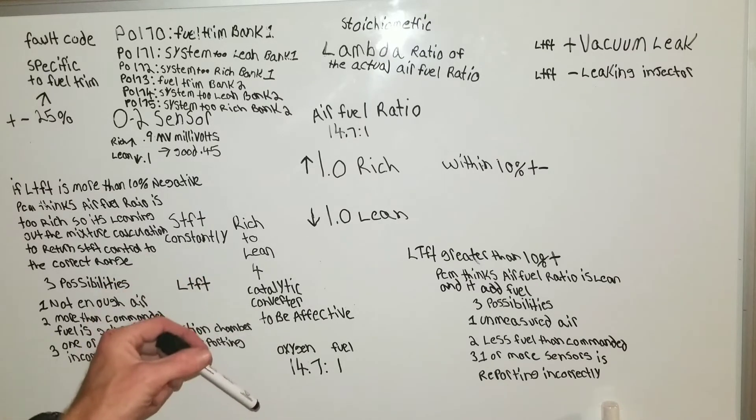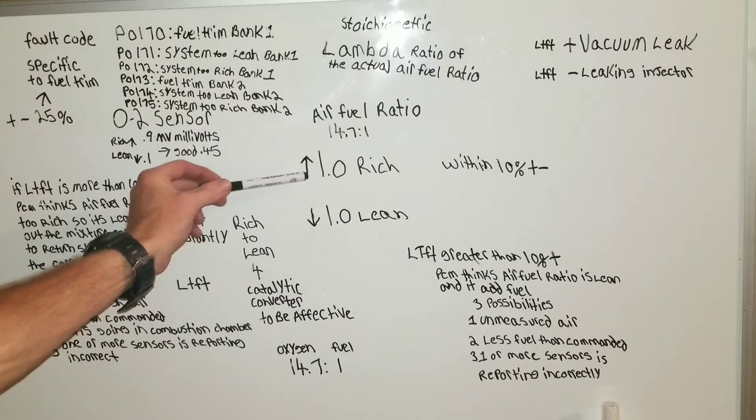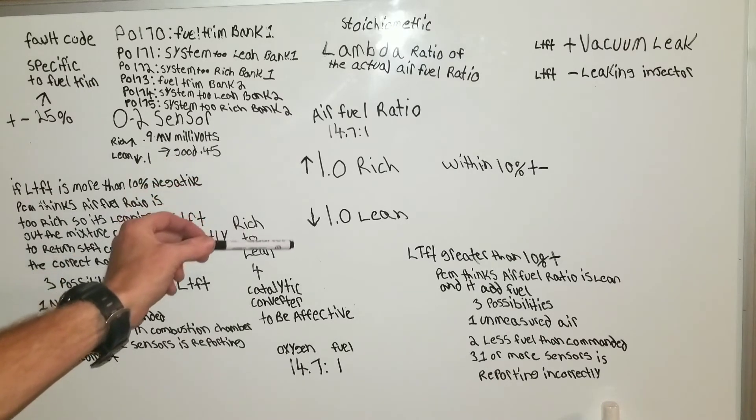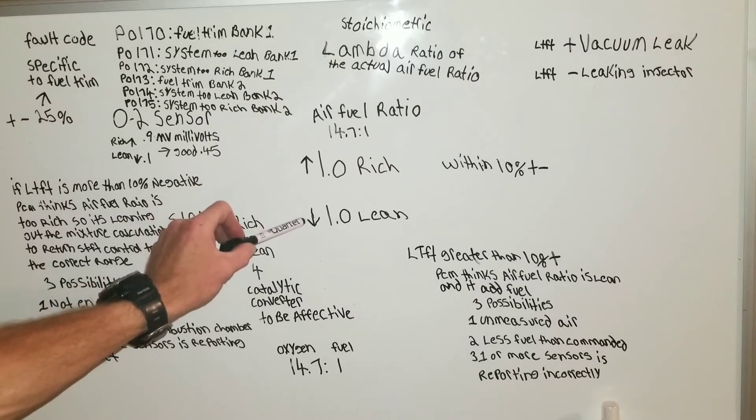If your air fuel ratio or lambda is above or below 1.0, as you can see here, above is rich, below is lean.